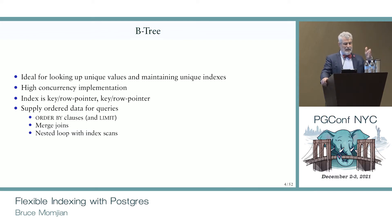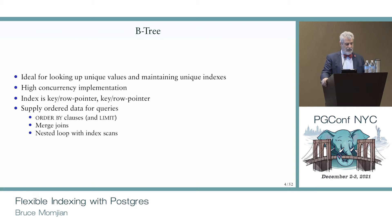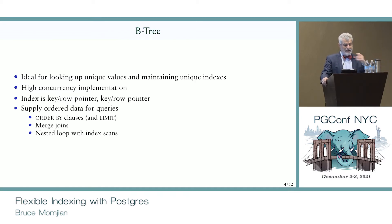Btree is set up as a key-row-pointer index: you typically have a key — the value you're indexing, like 5, 7, 12 — and then a row pointer to the actual data row containing that value. Btree is also very good for certain query types: order by, limit clauses, merge joins — covered in my 'Explaining the Postgres Query Optimizer' talk — and nested loop with index scans. But you may want more than that.